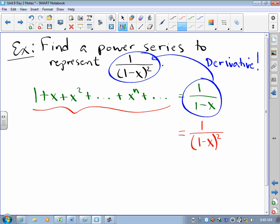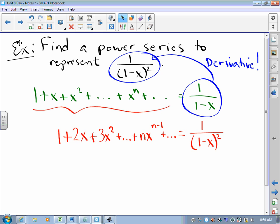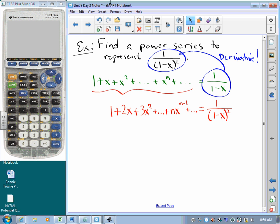Derivative of one is zero. Derivative of x is one. Derivative of x squared is 2x. Derivative of x cubed is 3x squared, and so on. Derivative of x to the n is nx to the (n - 1), and so on.